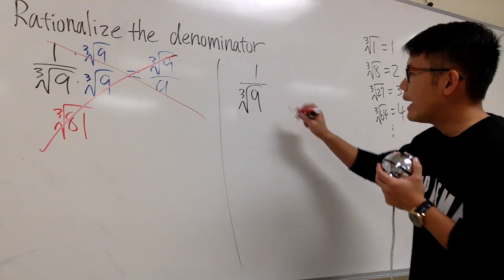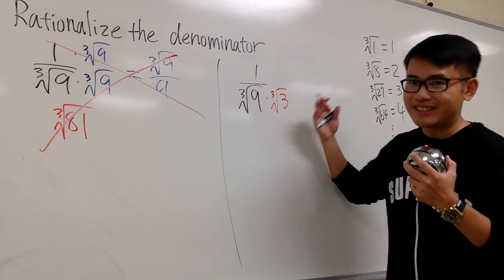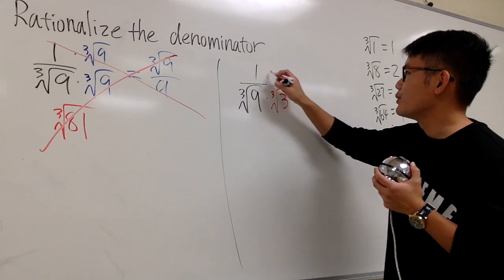So in fact, for this one, I'm going to multiply the bottom by the cube root of 3. And we do the same thing: bottom and also do it to the top.